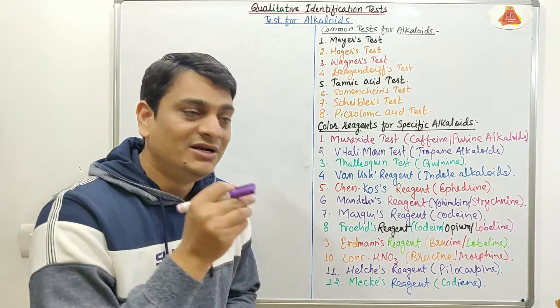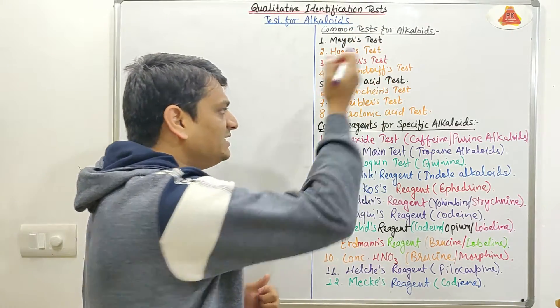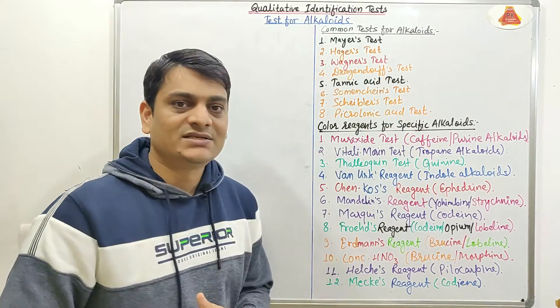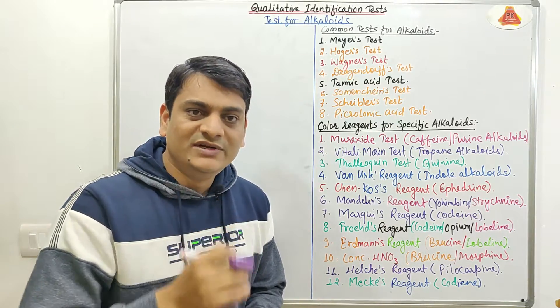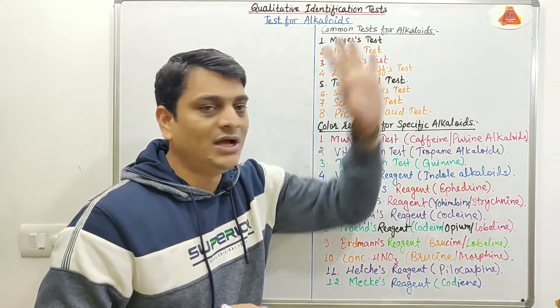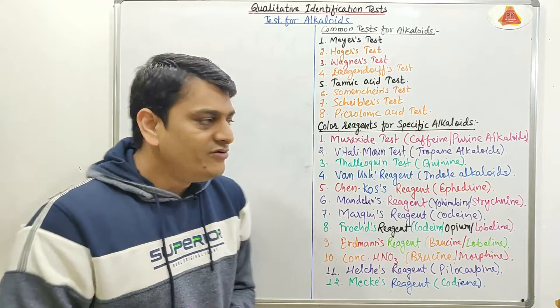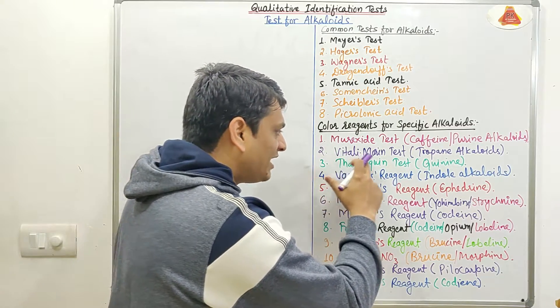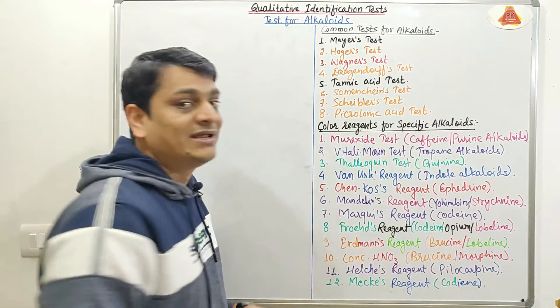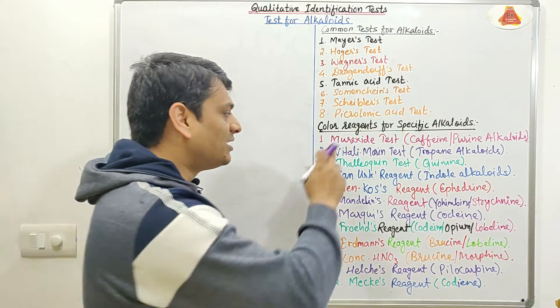In my previous videos, I have already discussed the details about all these tests individually as well as this murexide test. Link of those videos or playlist is given in the description as well as here in the i button. Now in this video, I am going to explain about Vitali Morin test which is specifically used for tropane alkaloids. So coming to the details of this test.